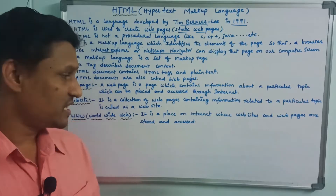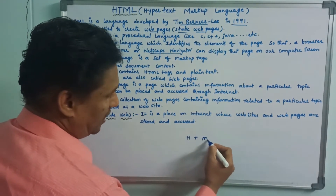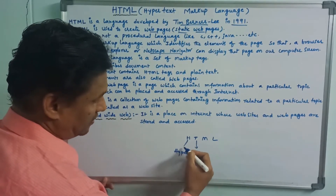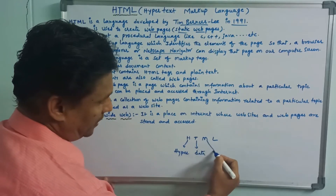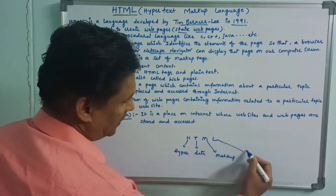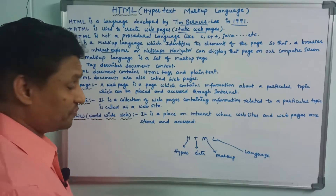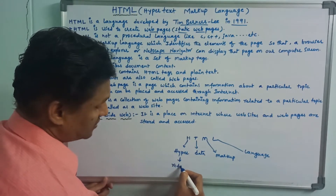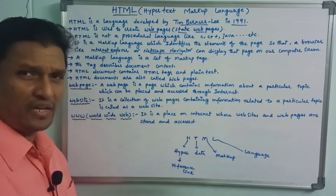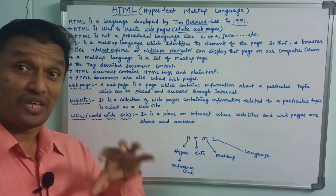Markup means — easy to understand — for example, HTML: H is Hyper, T is Text, M means Markup, L is Language. Hyper refers to a reference link — if you click on text, you can open up a page, so you can see hyperlink.